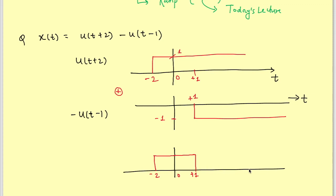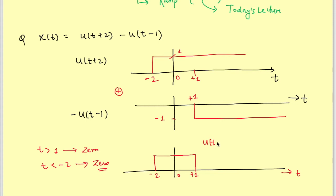So after t greater than 1 my signal is 0, and for t less than -2 my signal is also 0. This is problem number 1 — the signal u(t+2) minus u(t-1), which is a rectangular pulse.